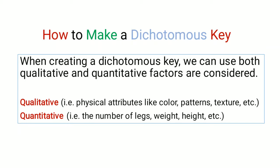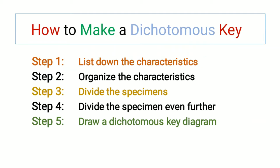You can use both qualitative and quantitative characteristics. Qualitative characteristics include, for example, color patterns, texture, and physical attributes. Quantitative characteristics means the number of legs, the weight of the specimens, or the height of the specimens. You can use both qualitative and quantitative characteristics at the same time for the identification of a specimen.